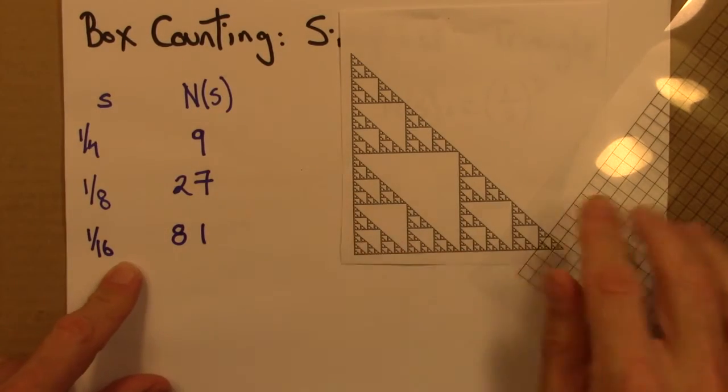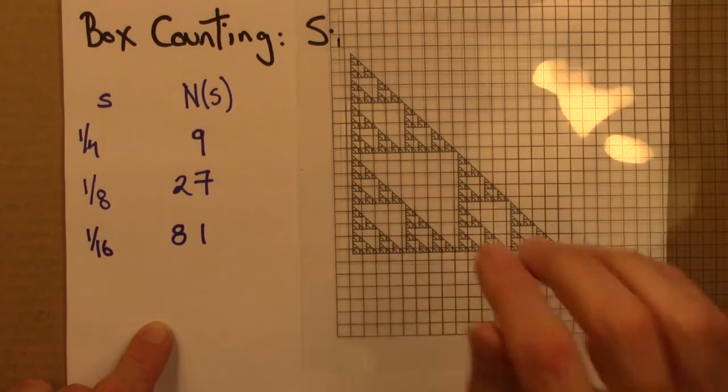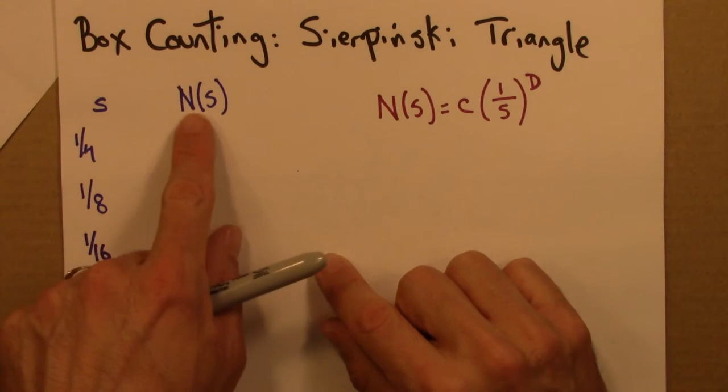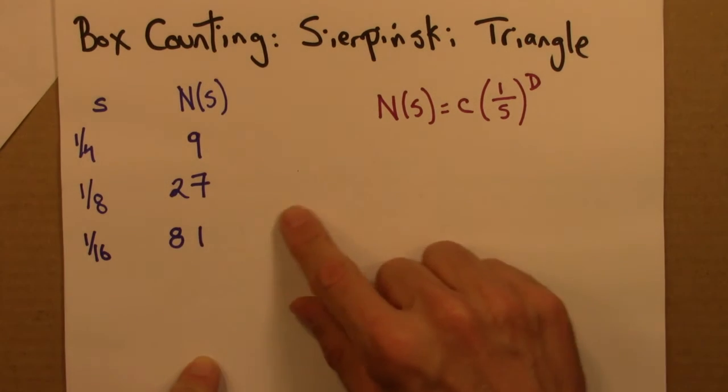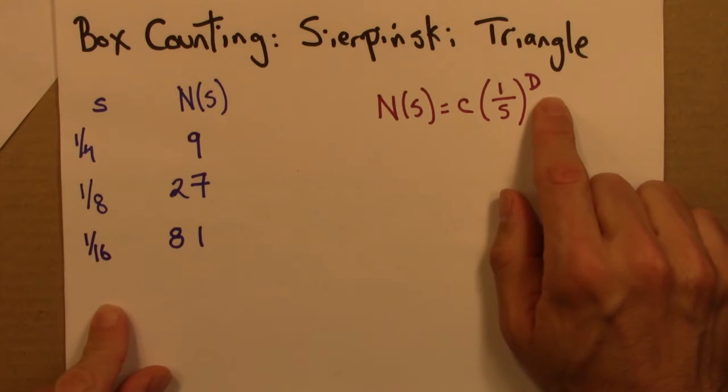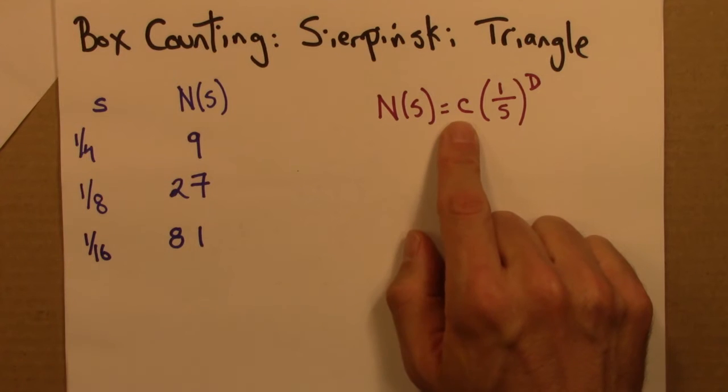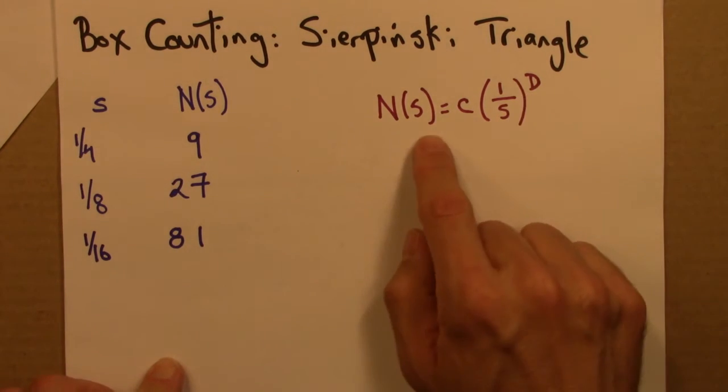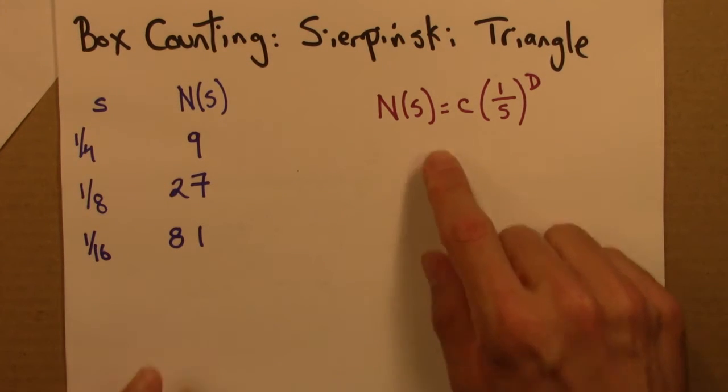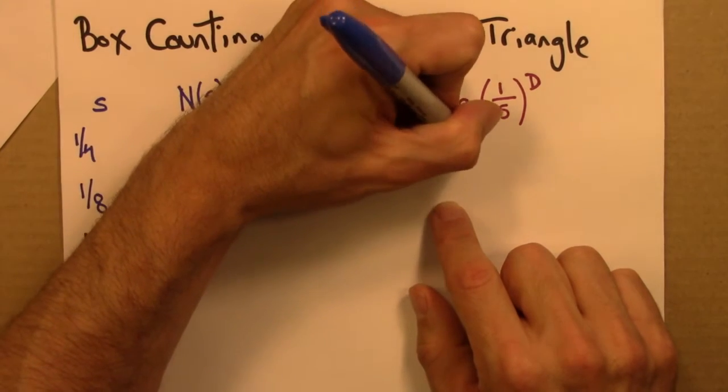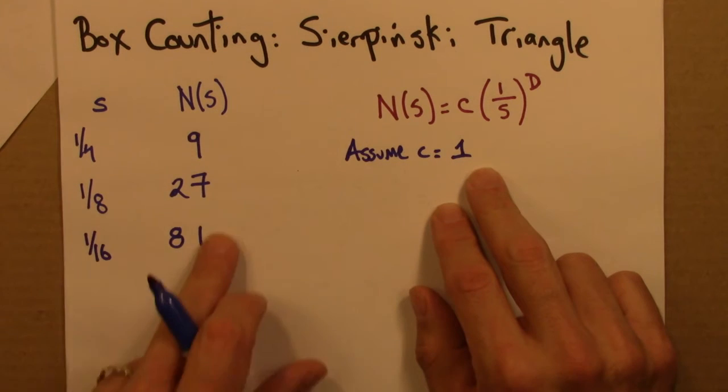So that's the data. Those are the numbers we would get from box counting for this Sierpinski triangle. So here's the data for the Sierpinski triangle: side s, and the number of boxes that we need, N(s). So what we want to do is think about plugging these values into this equation. And our goal is D. We want to figure out the dimension. We saw in some previous examples that this constant c was 1. The first two examples we did, that was the case. So I'm just going to guess that c is 1 now.